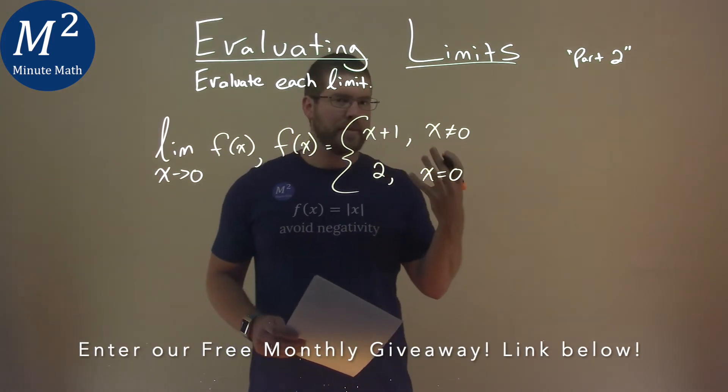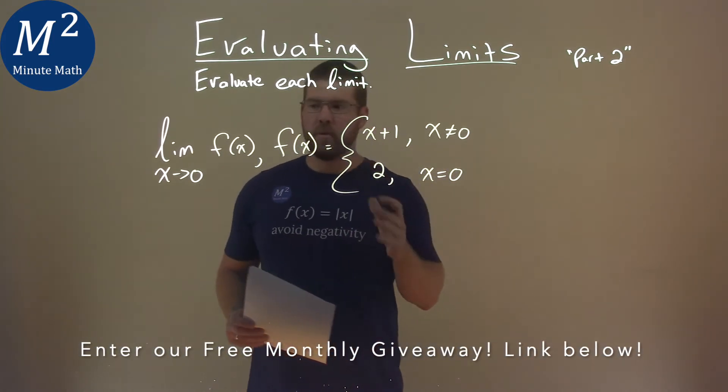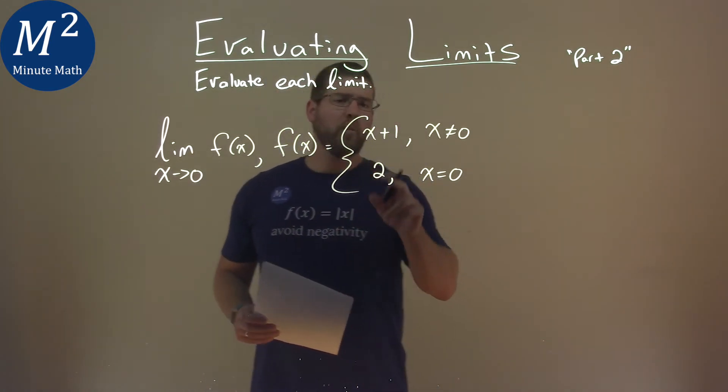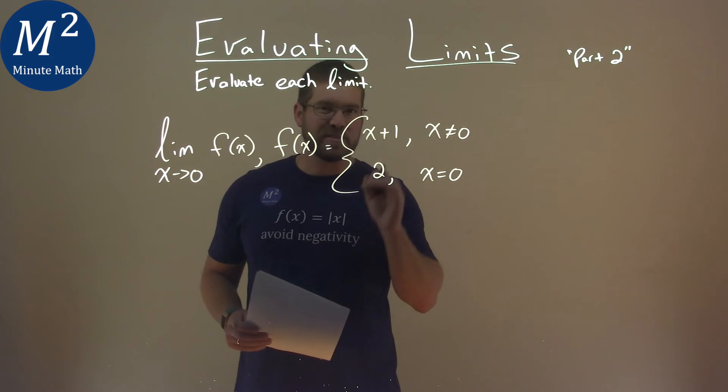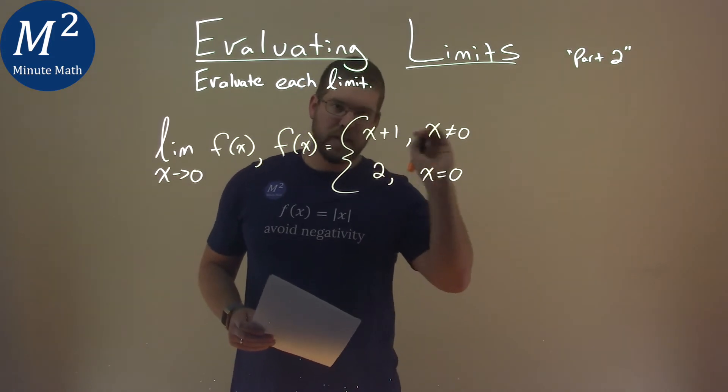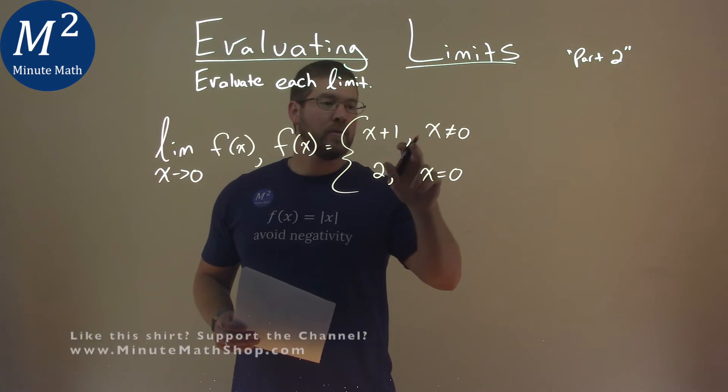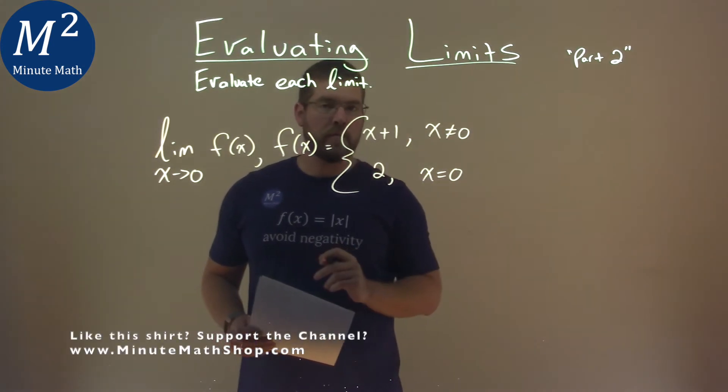Now our idea with limits is where it's approaching. So what happens when this function is approaching 0 from the left and the right? Well, with that we would have to deal with the first function. We're not finding when it's equal to 0, but when it's approaching, and on all other values approaching x equals 0, we use this first part of the function.